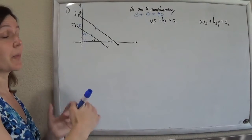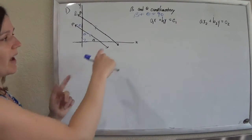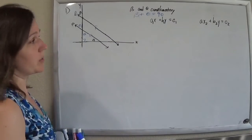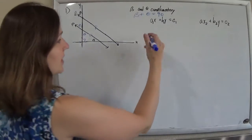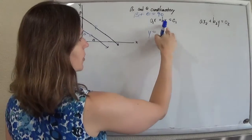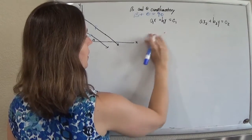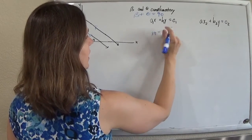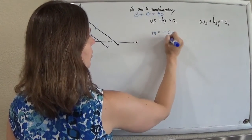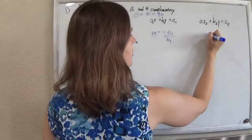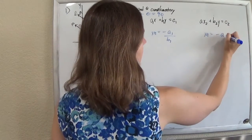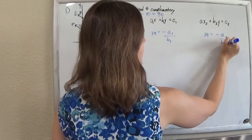Now that I know the lines are parallel for sure, I can say that the slopes of these two lines will be the same. If you put these lines in y equals mx plus b form, you'll find that the slope of this one is negative a1 over b1, and that the slope of this one is negative a2 over b2.